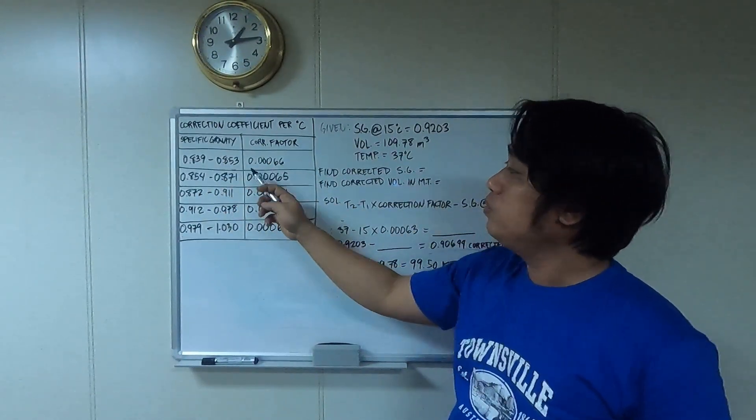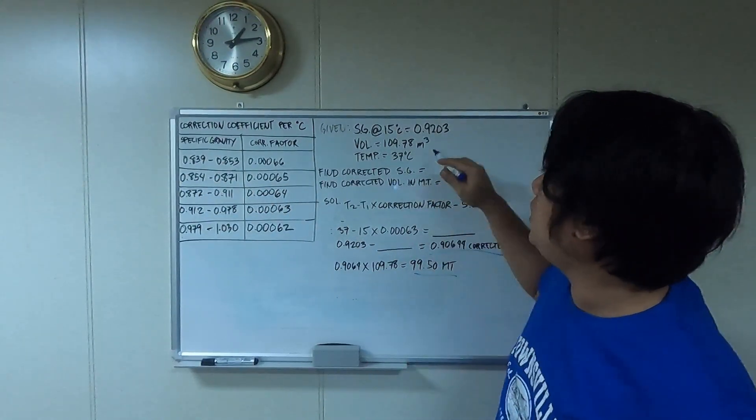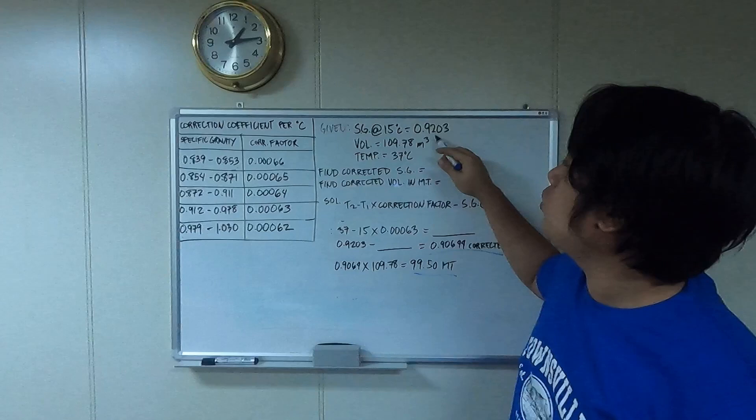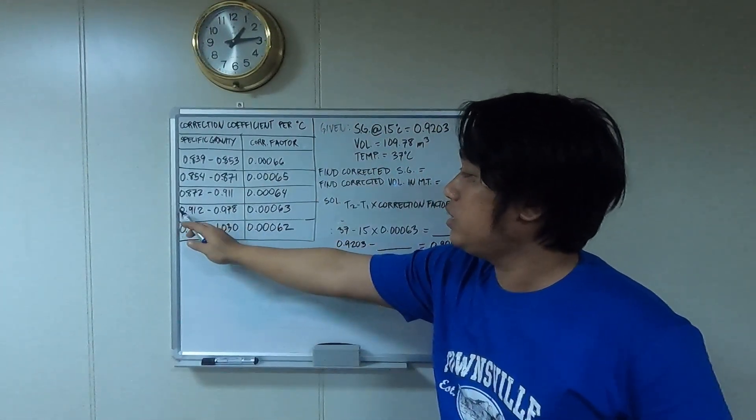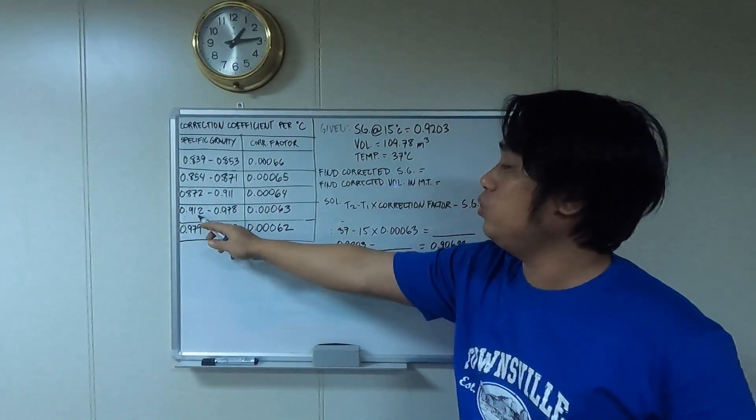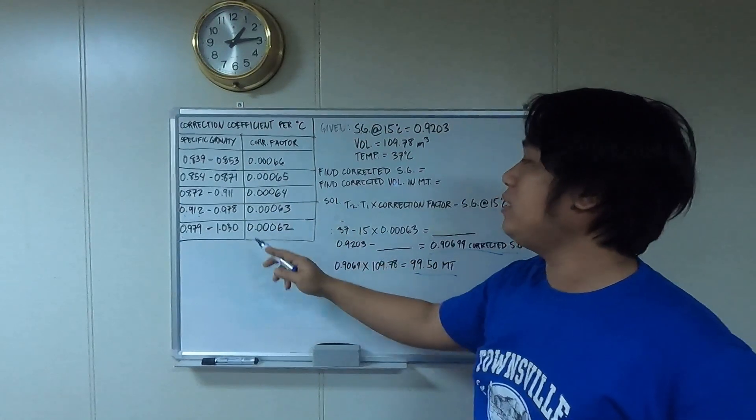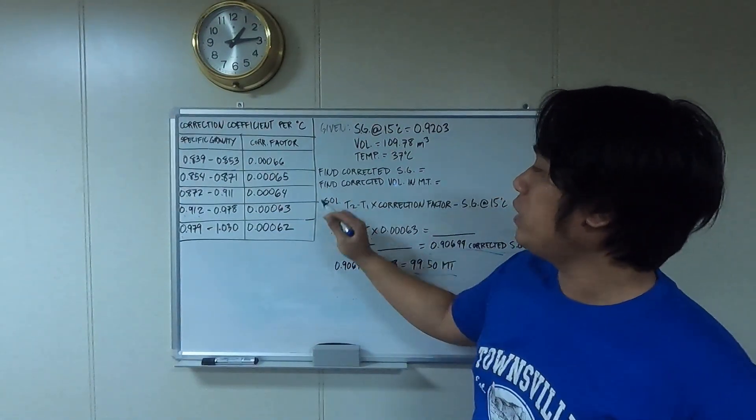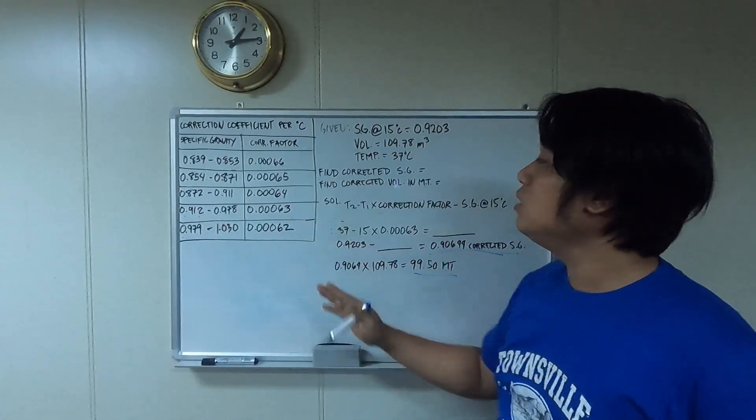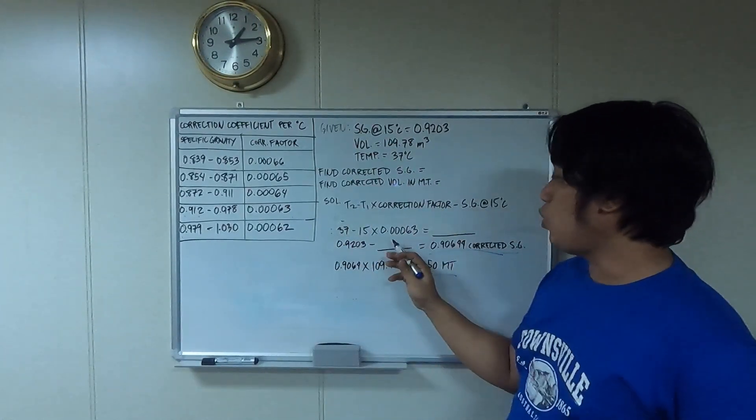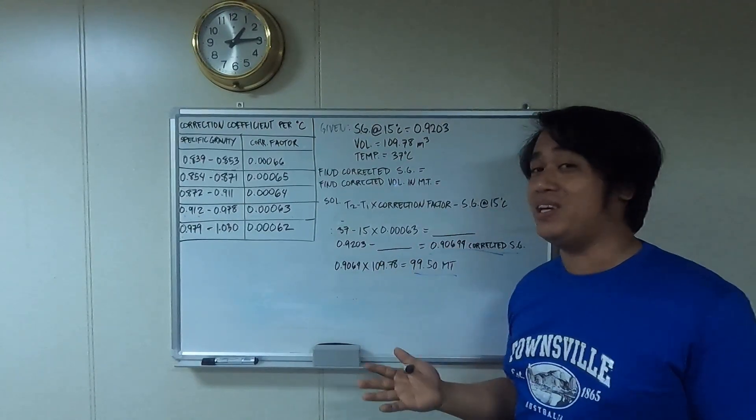For example, our SG is 0.9203, so we're going to find it here. The value range from 0.912 to 0.978 has a correction factor of 0.00063. That's why I'm going to use this 0.00063.